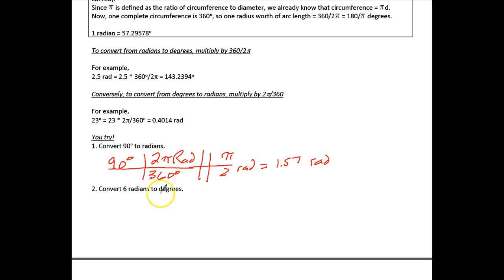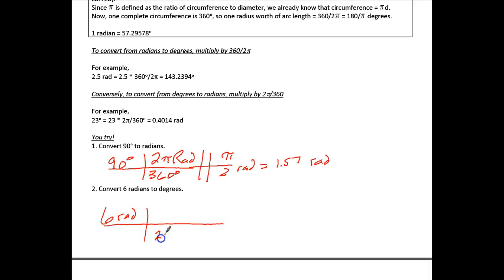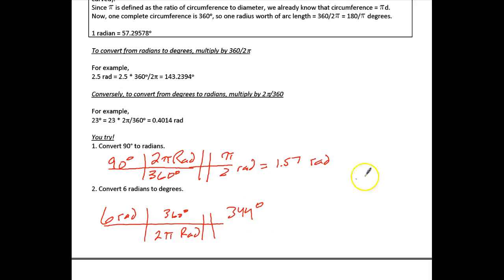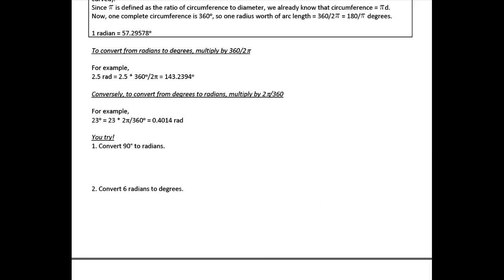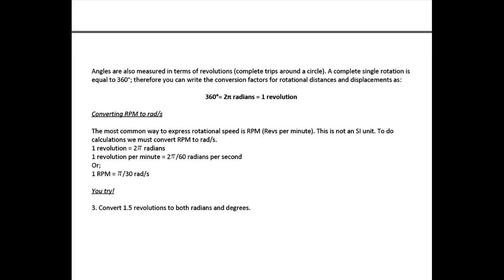They also want us to convert the other way — from 6 radians to degrees. So I go from 6 radians, and since 2π radians equals 360 degrees, I end up with 344 degrees. Pretty simple to do, not a lot there, just basic conversions.